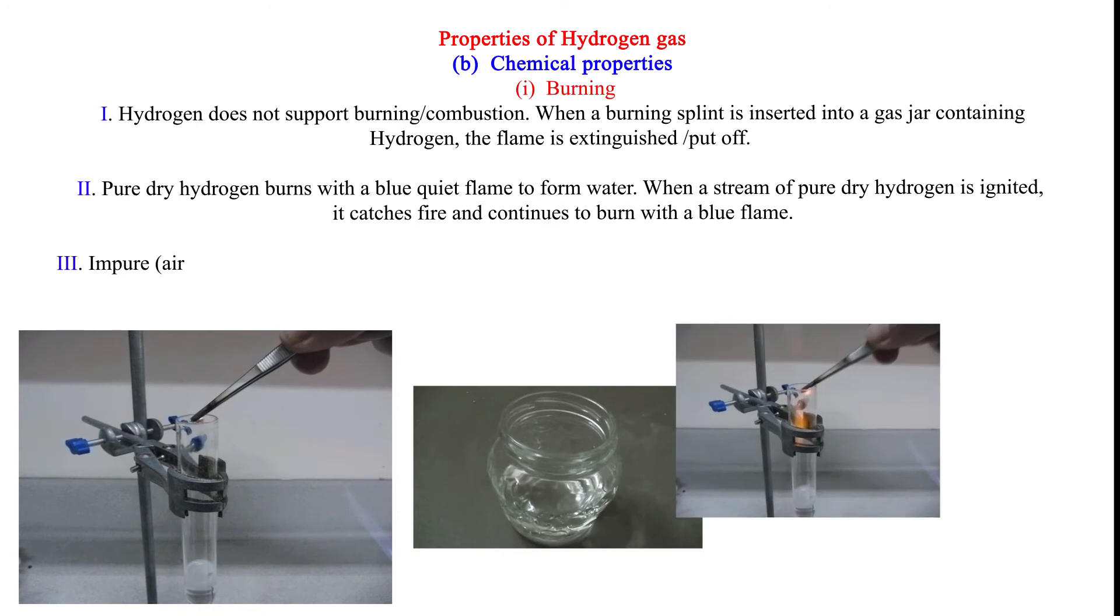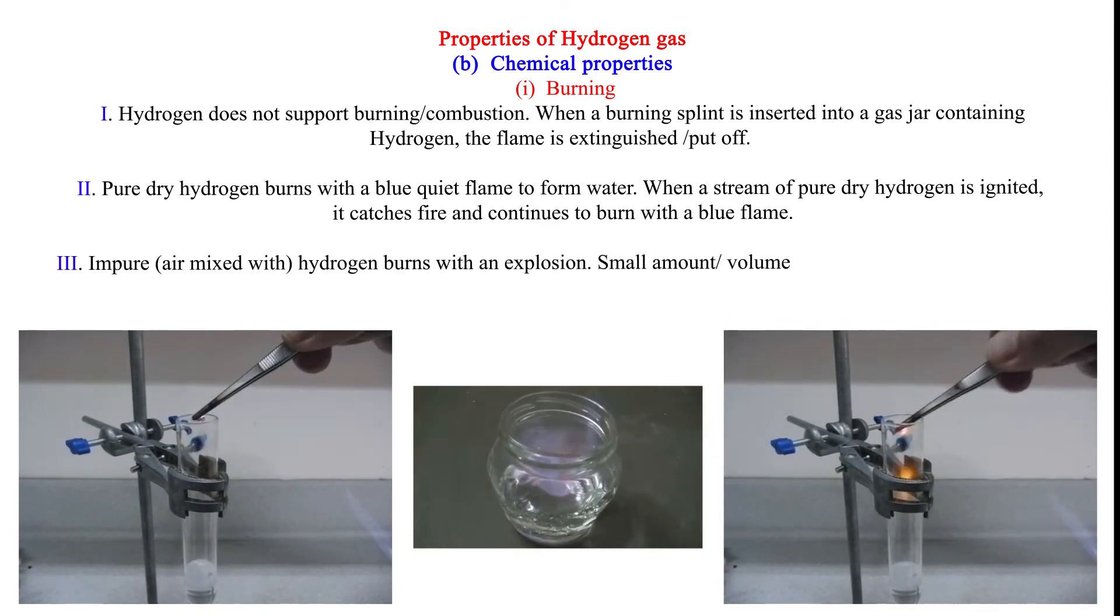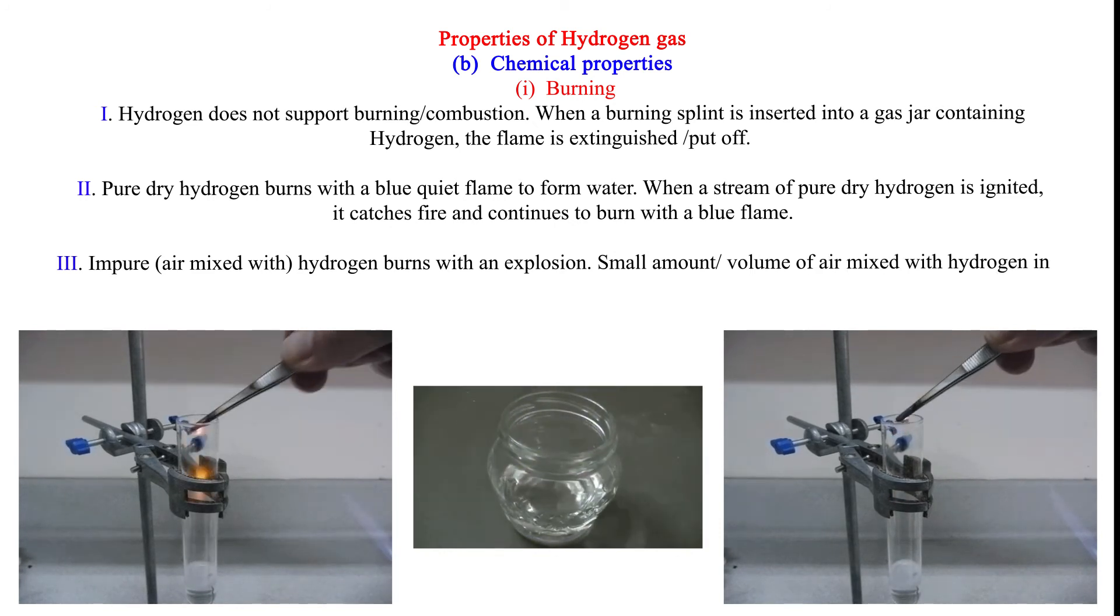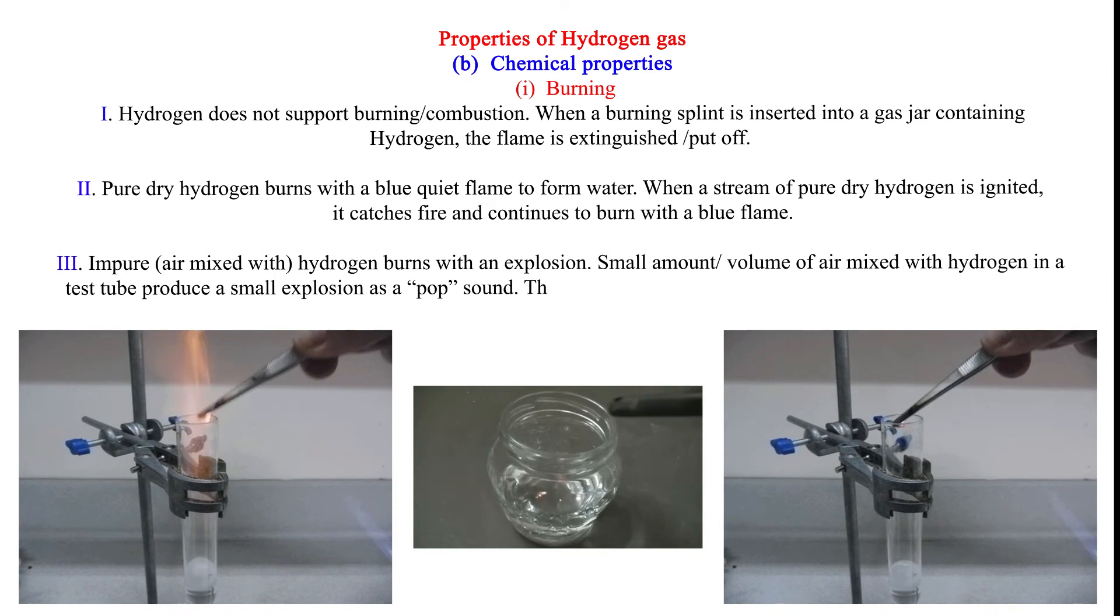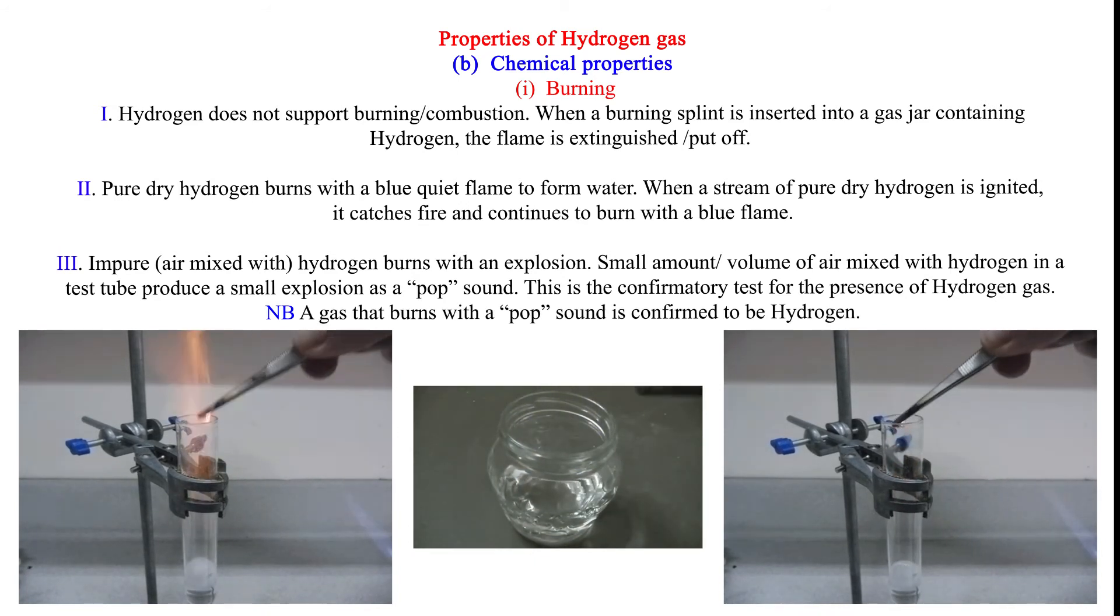3. Impure air mixed with hydrogen burns with an explosion. Small amounts or volumes of air mixed with hydrogen in a test tube produce a small explosion as a pop sound. This is the confirmatory test for the presence of hydrogen gas. Note: A gas that burns with a pop sound is confirmed to be hydrogen.